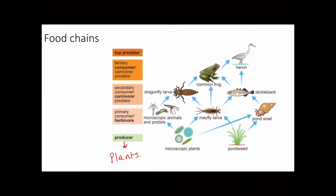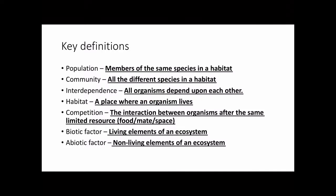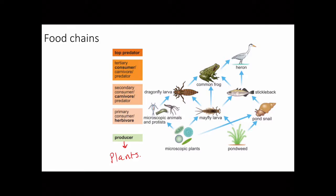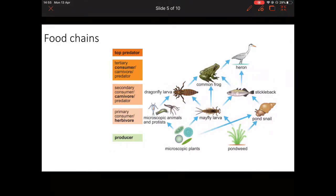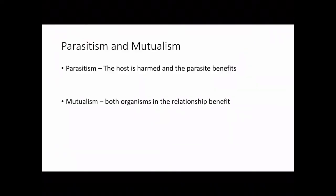The second thing I want to talk about in food chains is how they illustrate interdependence — the idea that all organisms depend on each other. Food chains are a great way of showing this because all the different arrows represent links. For example, the stickleback is dependent on mayfly larvae as a food source, but it's also in competition with dragonfly larvae for the same food — that's an example of inter-specific competition.